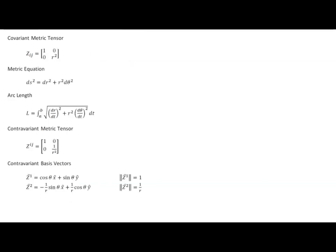Let's move on to plane polar coordinates. Based on our last discussion, this is going to go really quickly. We start by iterating through all the components of our covariant metric tensor, and because it's an orthogonal system, only the diagonals survive. So A·B starts with Z_11, which is 1, times contravariant components A^1, B^1. The only other surviving term is Z_22, which is R squared times A^2, B^2. We don't need to consider Z_12 or Z_21 because they're zero.